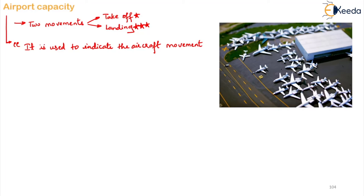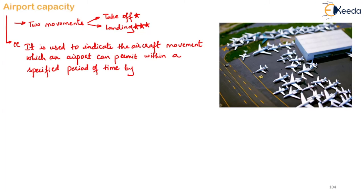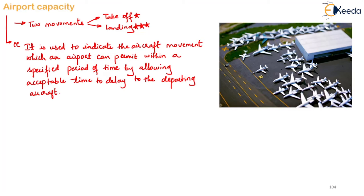The movement can be both takeoff as well as landing, which an airport can permit within a specified period of time by allowing acceptable time of delay to the departing aircraft. There will be a lot of departing aircraft and a lot of aircraft which will be landing. The airport capacity is designed so that at a particular period of time, however many aircraft are departing — even considering the delay of the departing — you can still accommodate the landing of other aircraft. That exactly is the airport capacity.